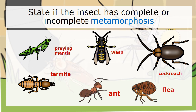Let's go to the praying mantis — complete or incomplete? The termite. C represents complete. The praying mantis and the termite both have complete metamorphosis. Which other ones have complete metamorphosis? That's right — the cockroach. So therefore the wasps, the ant, and the flea, they have incomplete metamorphosis.